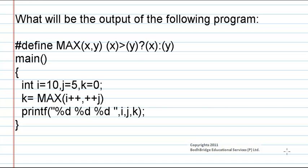In the main function, the variables i, j, and k are declared as integers and are assigned values. Now i is equal to 10, j is equal to 5, and k is equal to 0. Next, k is equal to MAX of i plus plus comma plus plus j. Now the macro MAX is called here and the arguments that are passed in the macro definition is i plus plus comma plus plus j, and then we are printing the values of i, j, and k.